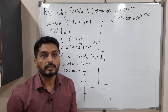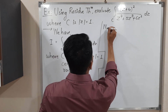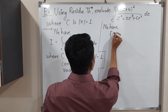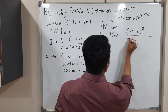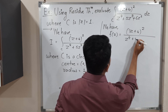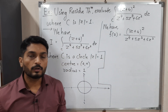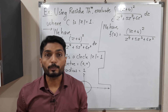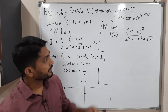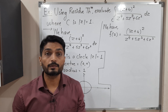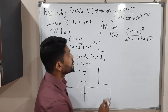The second important thing is the function. We have f(z) = (z + 4)² upon z⁴ + 5z³ + 6z². When we have a function like this, we write the denominator as a product of factors. Here we have a polynomial of degree 4, so I will express it as a product of factors to make it easier to solve.